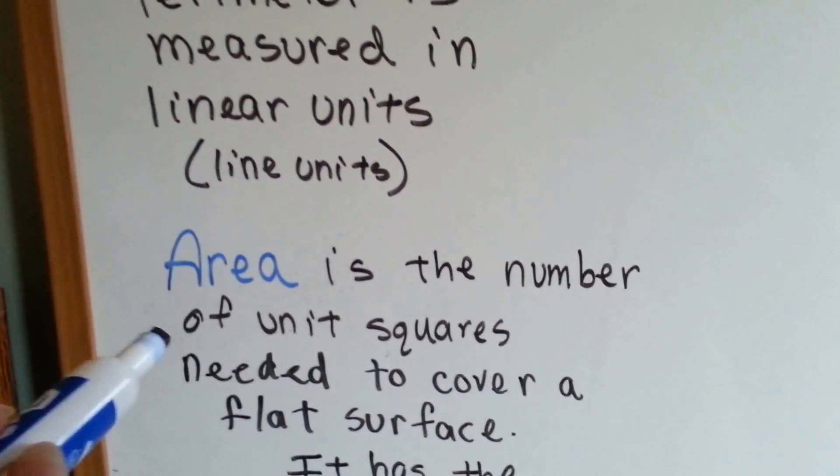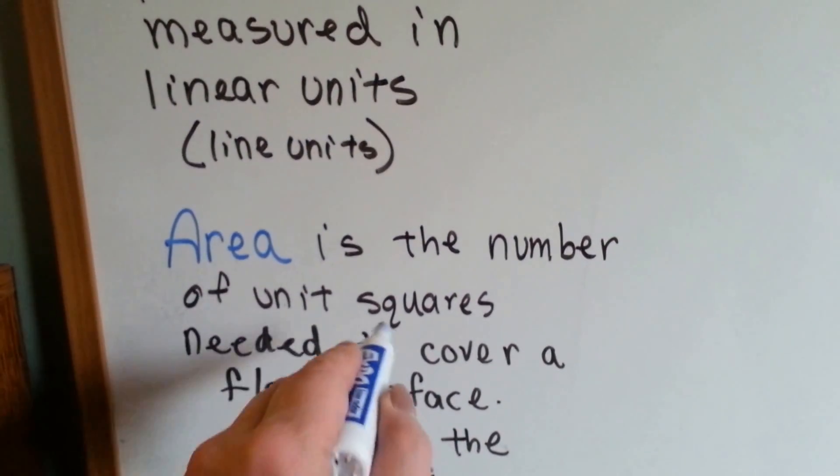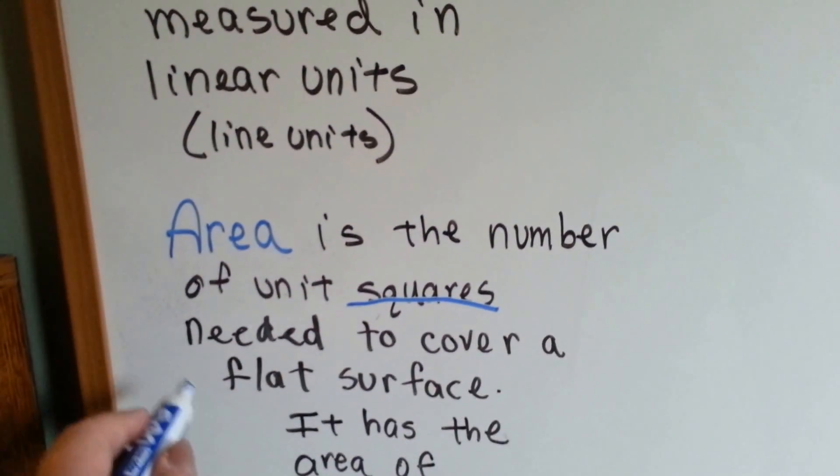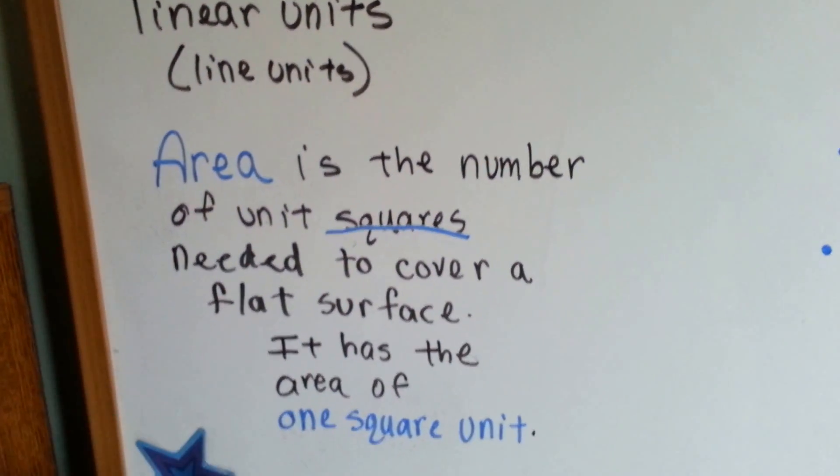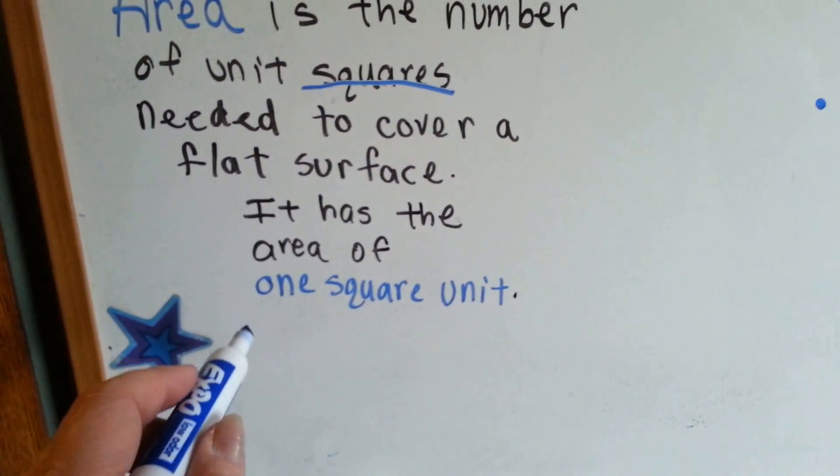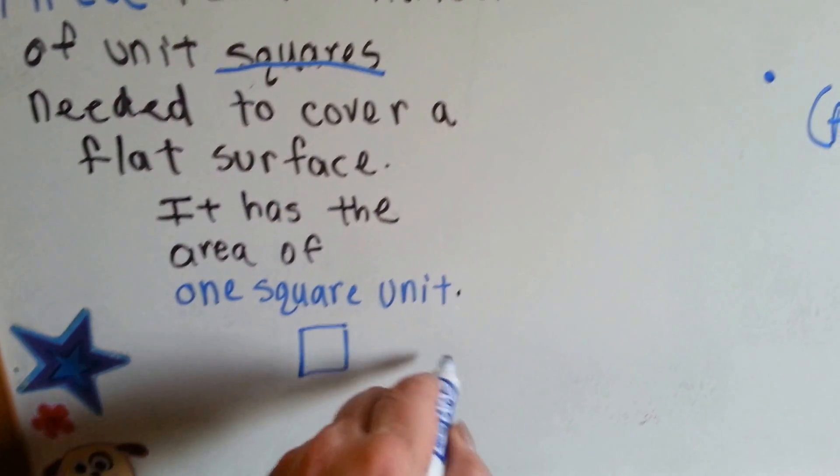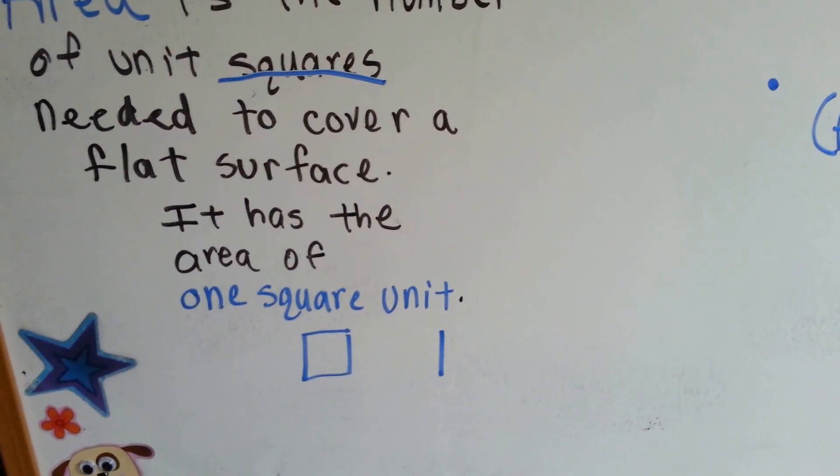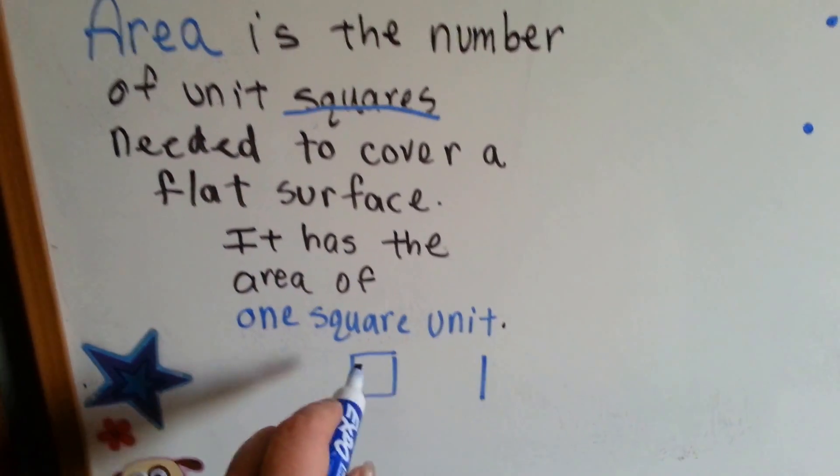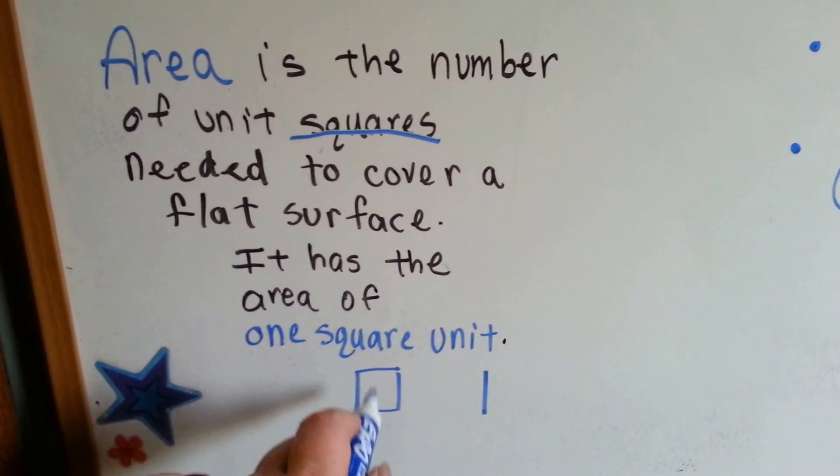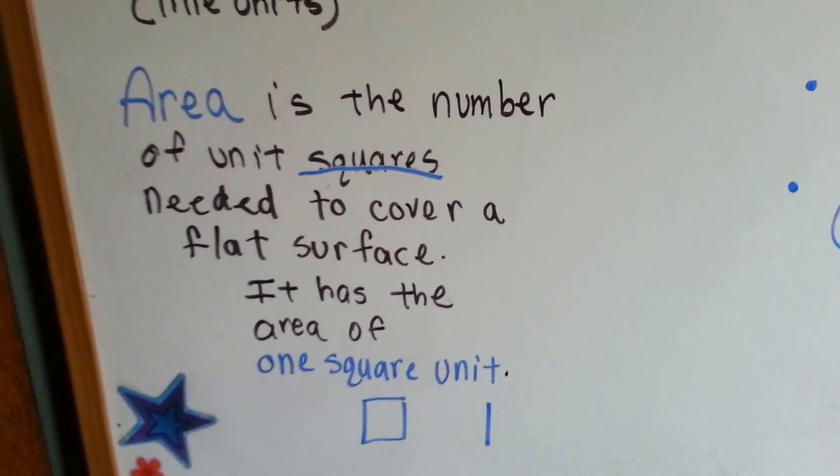The area is the number of unit squares needed to cover a flat surface. It has the area of one square unit. Where perimeter is just the measure of a line of an edge, area is the number of squares inside of the object.